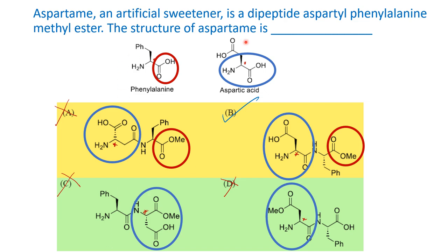In summary, peptide nomenclature is written such that the amino acid at the N-terminal end is written first, the chain continues, and the C-terminal amino acid is written in complete form. The other amino acids in the chain have 'yl' as a suffix replacing 'ine'. Derivatizations like esterification are also included in the nomenclature. For aspartyl phenylalanine methyl ester, option B is the correct answer — only in this case is the aspartyl group's beta carboxylic acid free and phenylalanine's carboxylic end converted into a methyl ester.